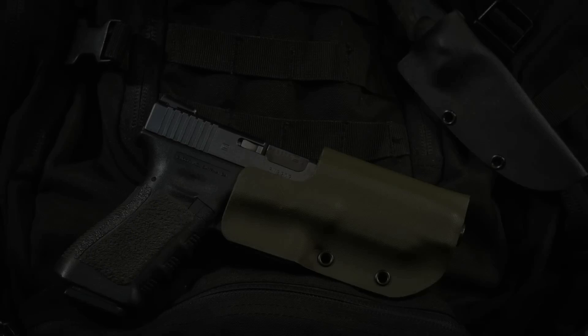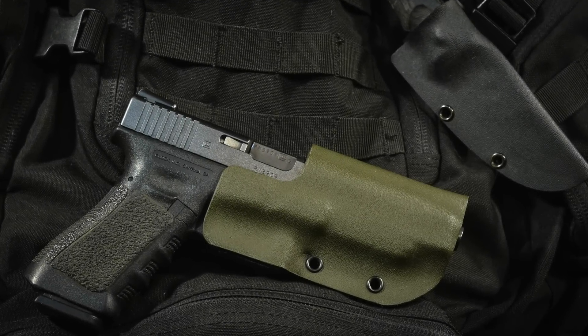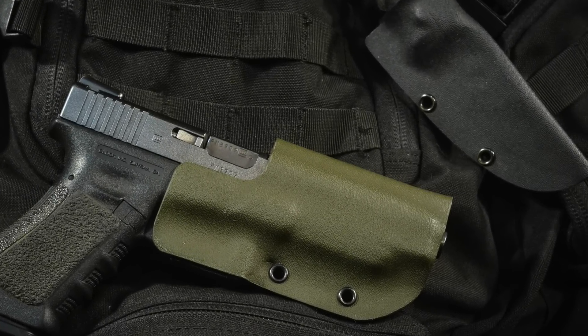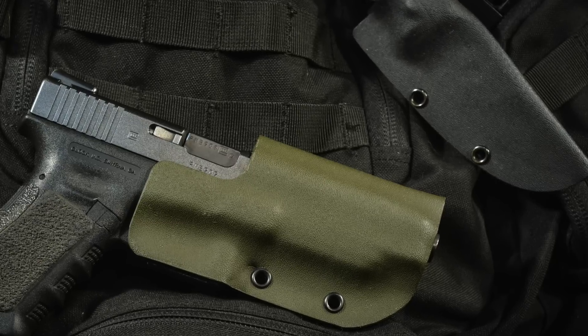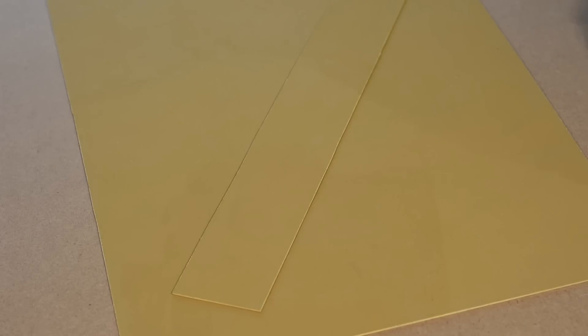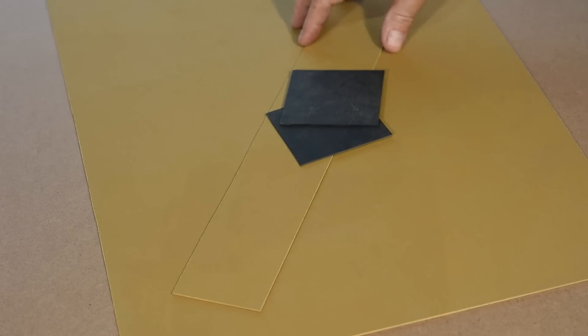Kydex is a thermo formable plastic, meaning you can heat it and mush it into a new shape and when it cools it'll hold the shape. Kydex is purchased in sheet form; you can buy it in a multitude of colors in sizes up to four by eight feet.